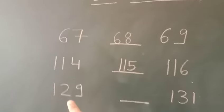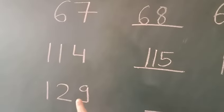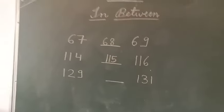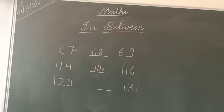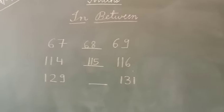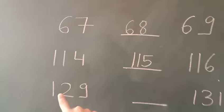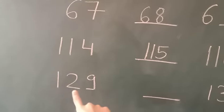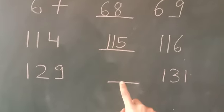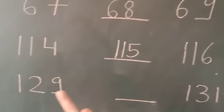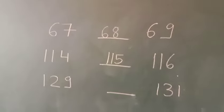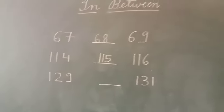Now, third number is 129. Can you tell me children, what number comes in-between 129 and 131? As you are seeing that it has been written on the board, 129 and 131. Which number will come in-between 129 and 131? Can you tell me? You can think.